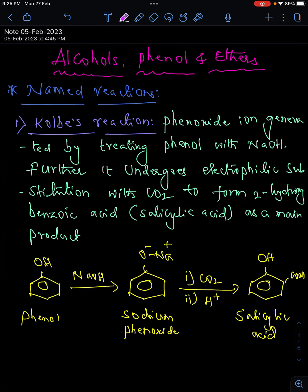Important name reactions from alcohols, phenols and ethers. The first reaction is Kolbe's reaction: phenoxide ion generated by treating phenol with sodium hydroxide further undergoes electrophilic substitution with carbon dioxide to form 2-hydroxy benzoic acid, which is also called salicylic acid as the main product.